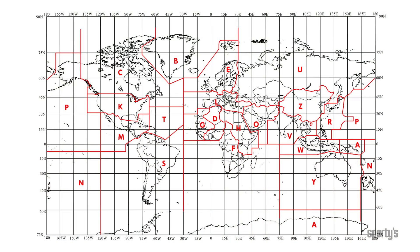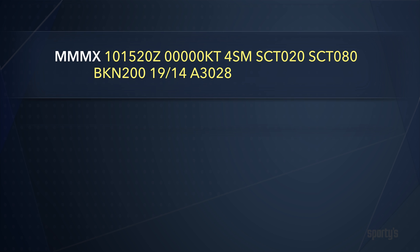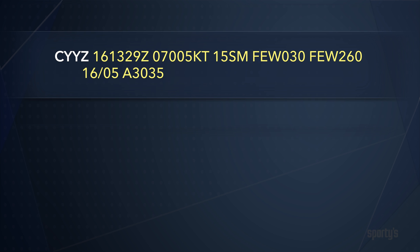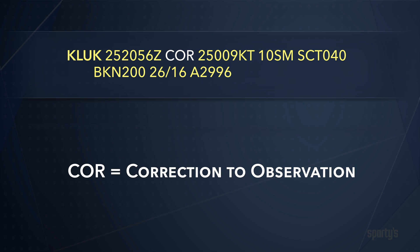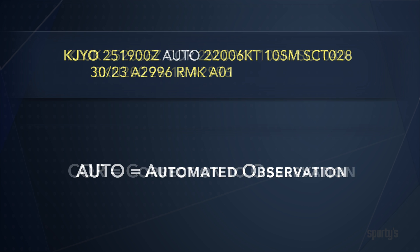Four-letter identifiers outside the continental United States will begin with letters other than K, such as M in Mexico — like this one for Mexico City — and C in Canada, Toronto for example. Some modifiers to a METAR may follow the time-date group. If you see COR following the time-date group, it means this is a correction to an observation. Auto, in this position, means the information comes from an automated station, like an AWOS, as here in Leesburg, Virginia.